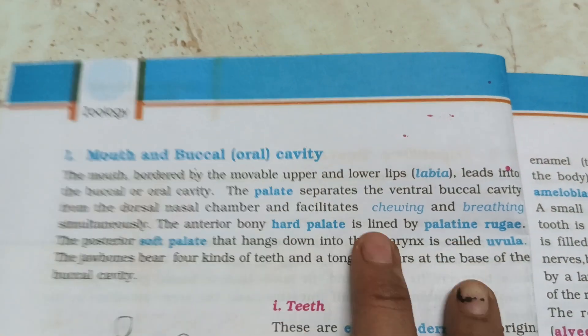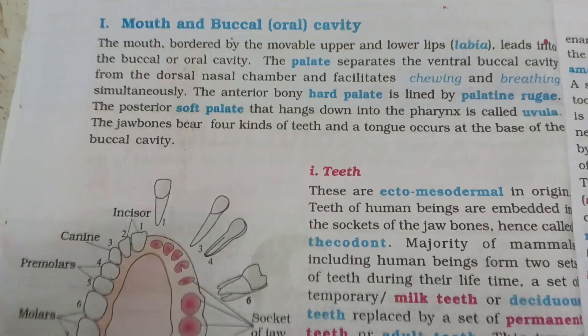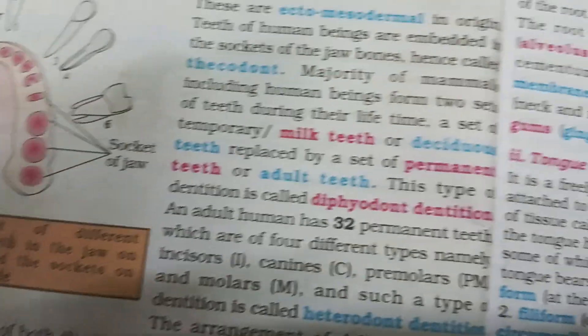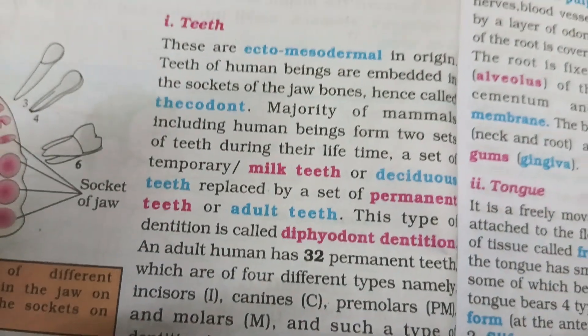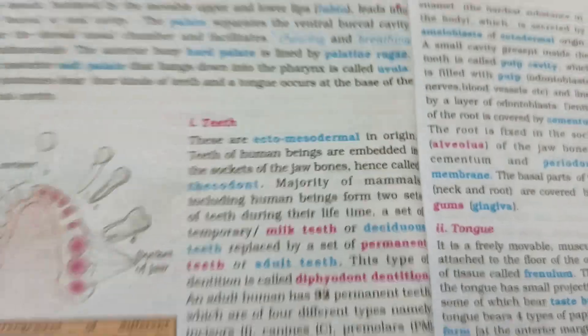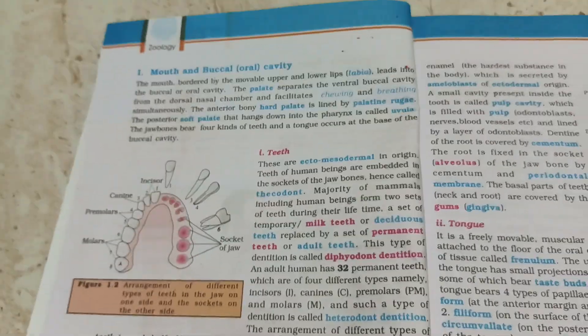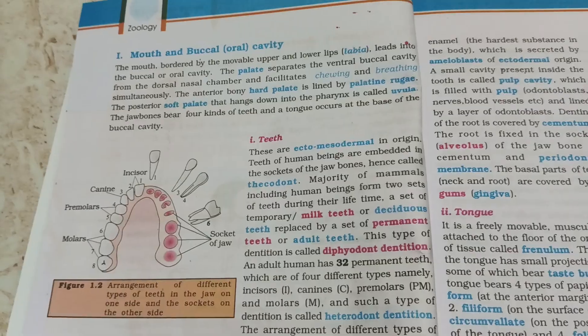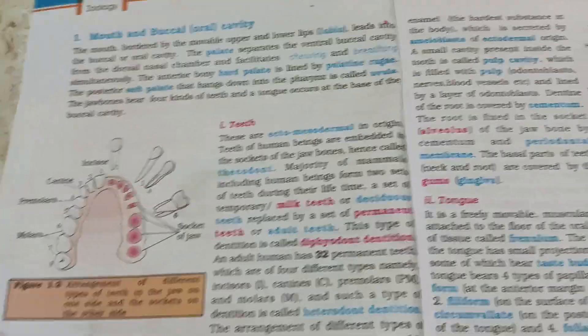So these are the buccal cavity parts. This is the end of the current video. Next video will cover teeth structure — how many types of teeth are present. Thanks for watching, please subscribe and like.